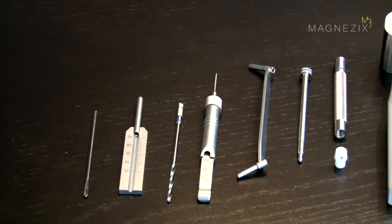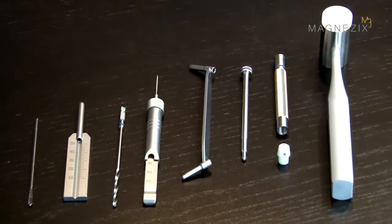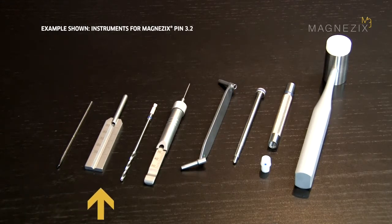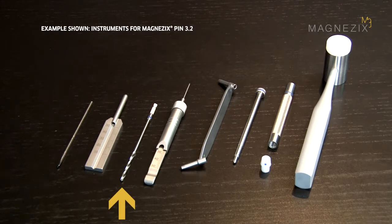You will need the following instruments to implant a Magnesix PIN 3.2: a 3.2 mm reduction wire, the measuring device, a 3.2 mm drill bit, and the depth gauge.